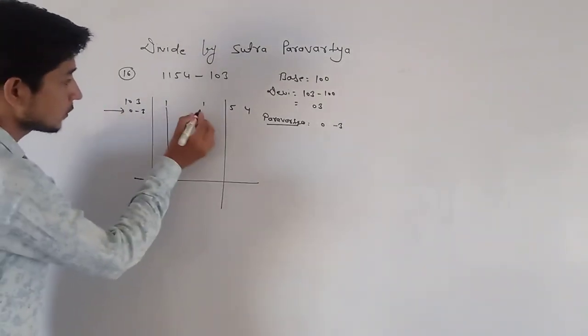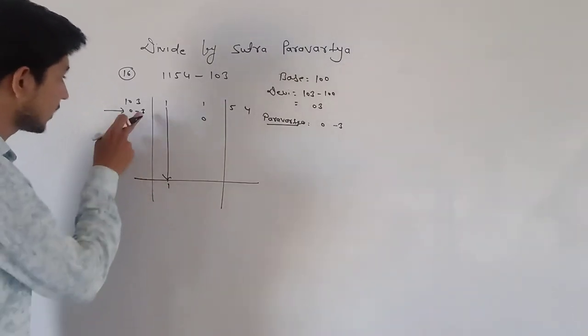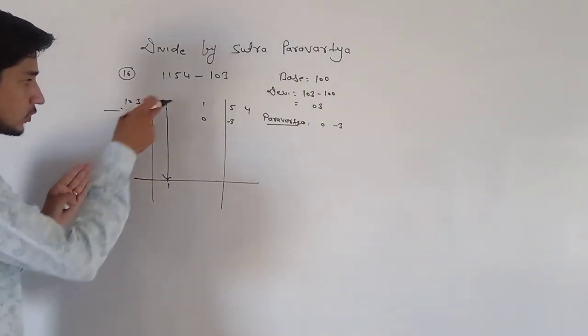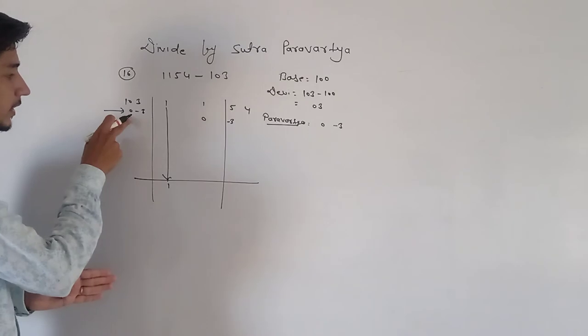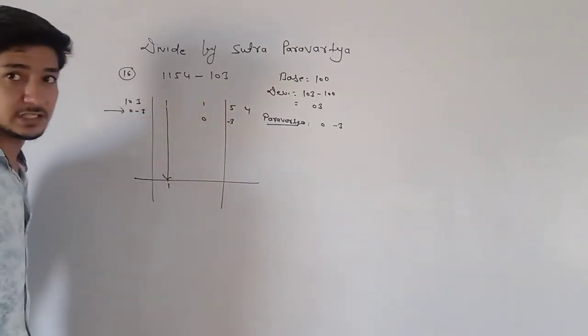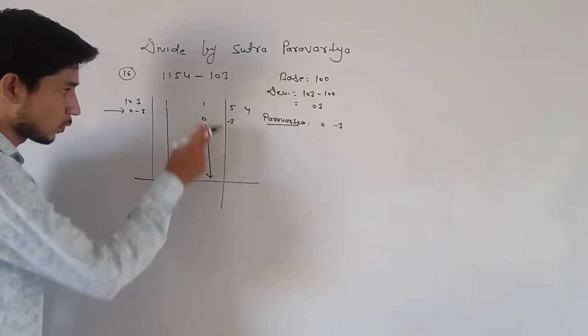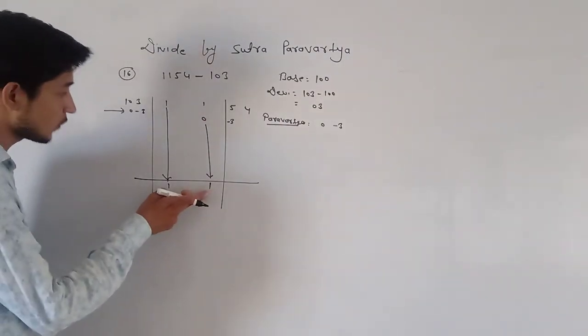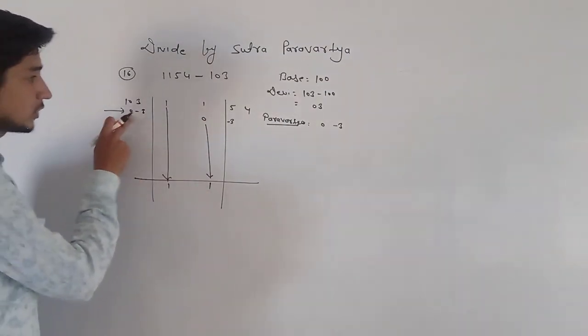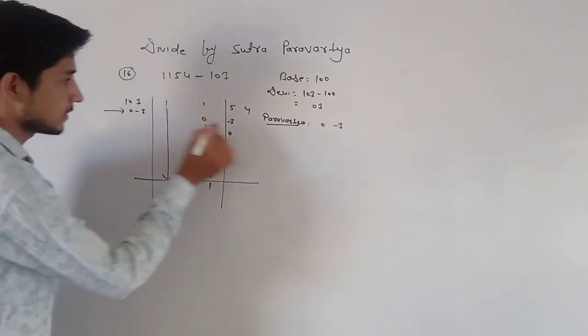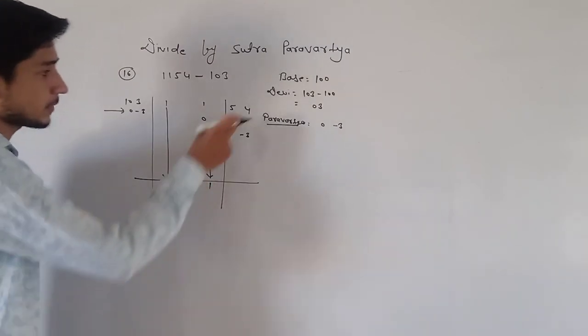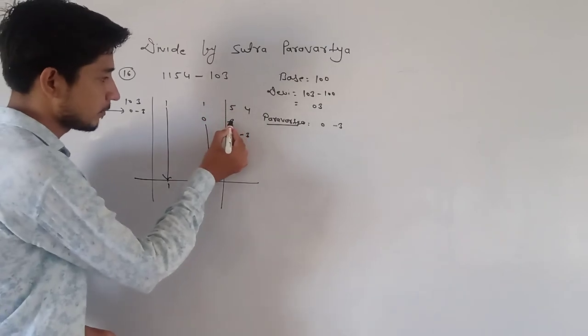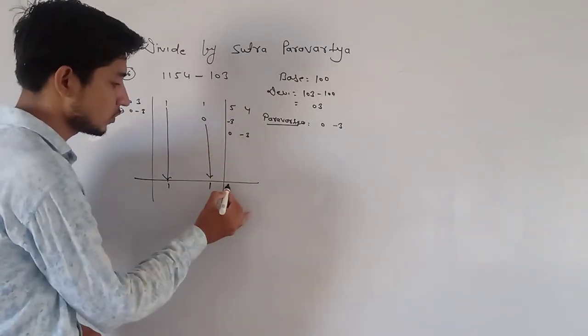1 times 0. 1 times 3. First time we will draw. Then, we will do the second row. 1 and 0, balance is 1. Then we will multiply and do the same. 5 minus 3, 2. 2 and 0, 2.